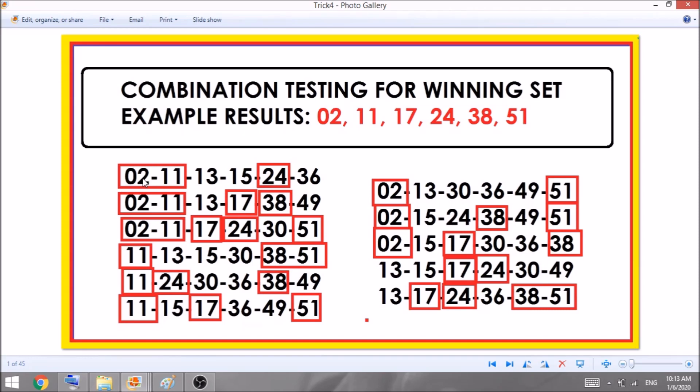The second line, another four number hit: the 02, 11, 17, and 38. A four number hit. On the third line, five number hits. This is a big consolation prize, next to the jackpot prize. On the fourth line, three number hits. Fifth line, three number hits. On the sixth line, three number hits. As you can see, multiple winnings of consolation prizes while aiming for the jackpot prize.